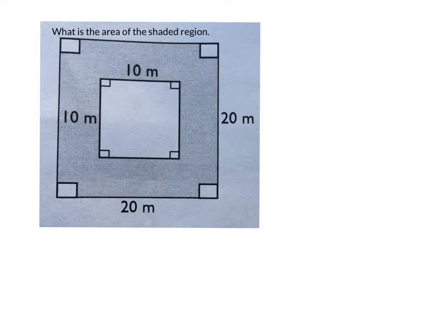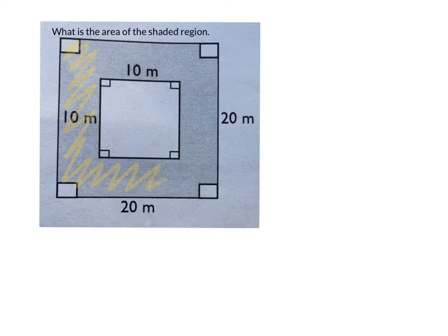So here in this problem, we're asked to find the area of a shaded region. You might not be able to see it very well, but it's basically the area in between this outer square and this inner square.